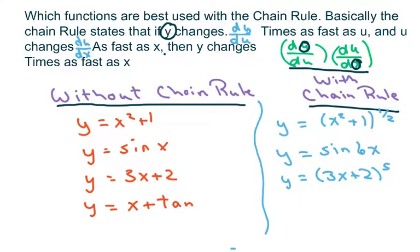and y equals x plus tan of x squared. And basically the reason we want to use a chain rule is because you can differentiate the inner part and also the power here.